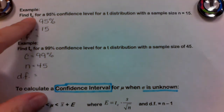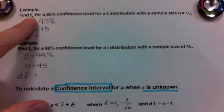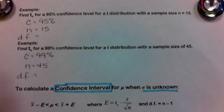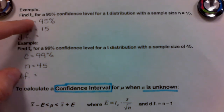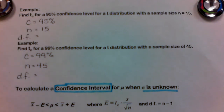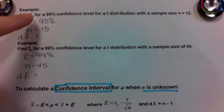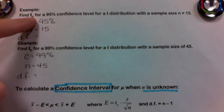To find T sub C: when sigma is known, you use Z sub C. When sigma is unknown, you use T sub C, which is the Student's T distribution.